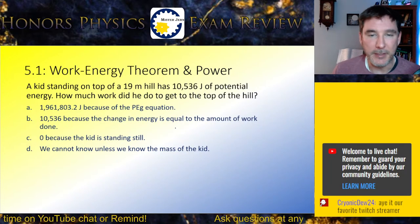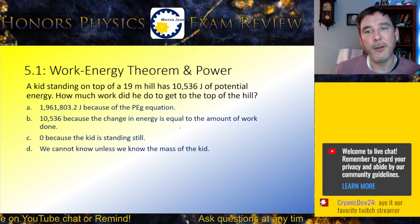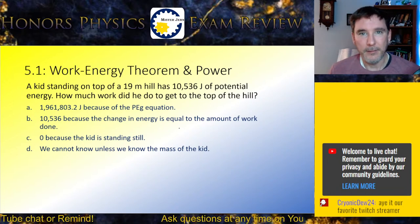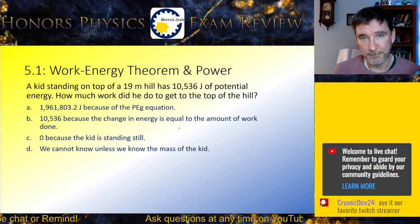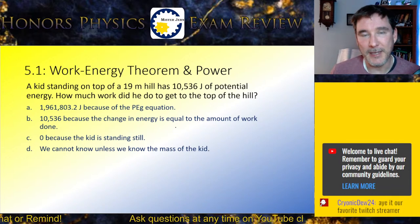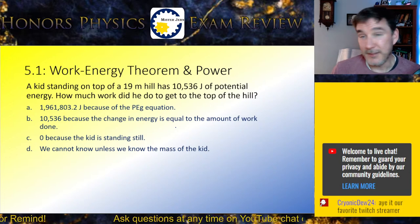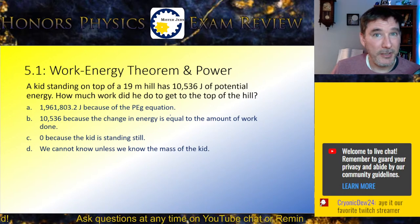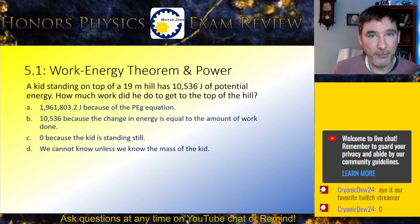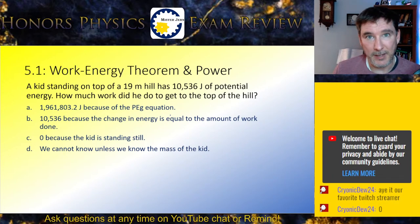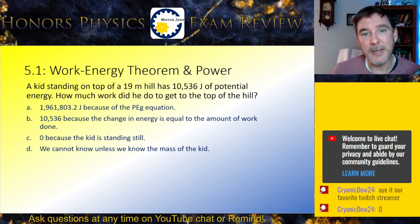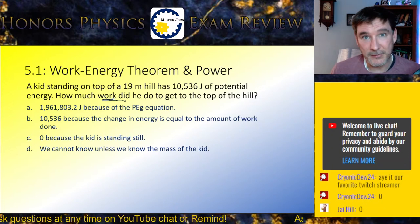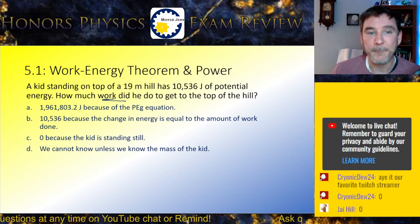A kid standing on top of a 19-meter hill has 10,536 joules of potential energy. How much work did he do to get to the top? You might start throwing these numbers into calculators doing multiplication or division, but if you do that, you're going to be wrong. It's asking how much work he did — so take a moment, look at the equation sheet, remind yourself when taking the test.